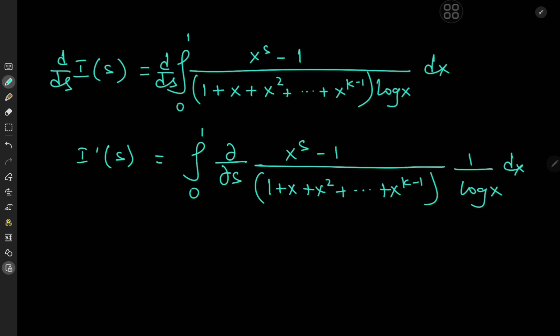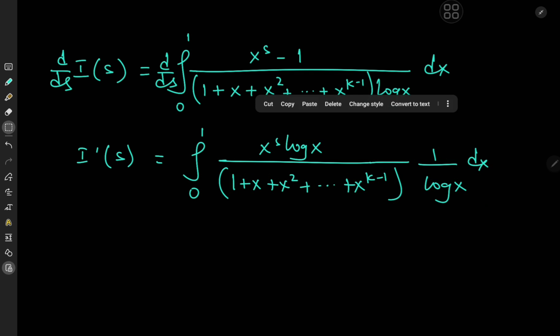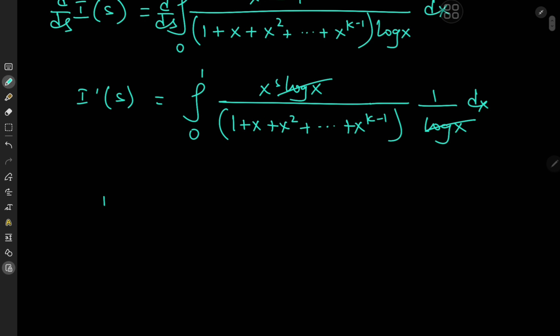What exactly is the derivative of x to the s with respect to s? We're differentiating with respect to s while holding x constant, so the structure we would get would be x to the s times the logarithm of x. That means the logarithms here are going to cancel out quite nicely.